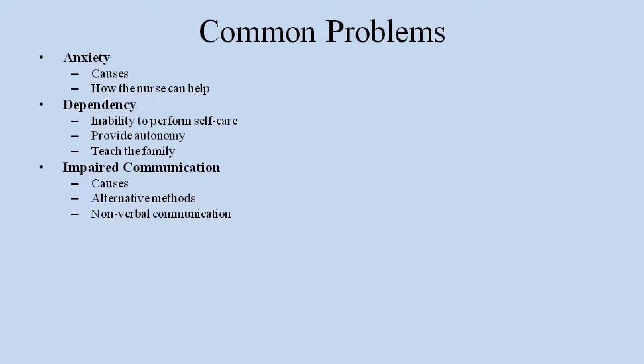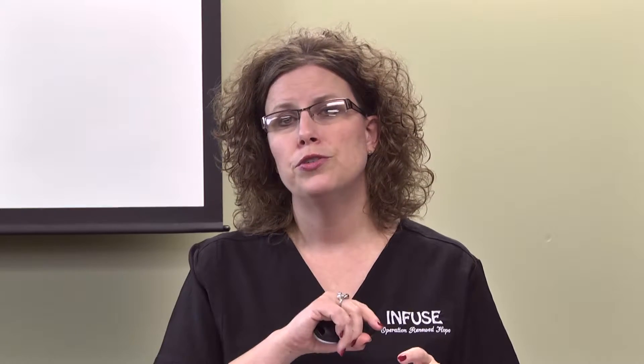A third common problem is impaired communication. In the ICU there can be multiple reasons why a patient has impaired communication. It could be because of injury — a patient who had a severe stroke affecting their speaking ability may not communicate by mouth but may be able to write. A patient on a ventilator with a breathing tube cannot talk, though they may be able to mouth some words. Options include communication boards for pointing to letters, dry erase boards with markers, or tablets and computers where they can type.